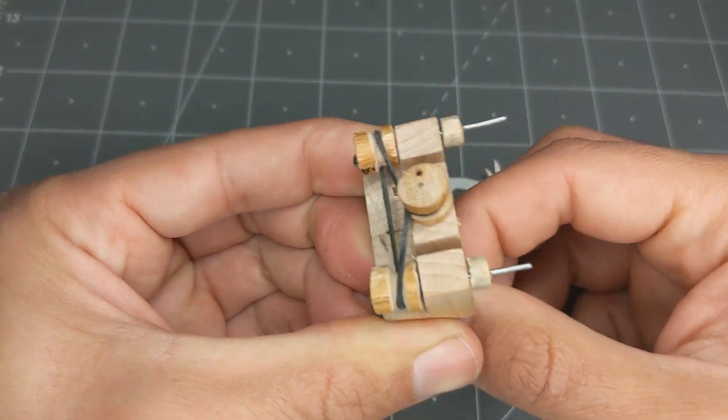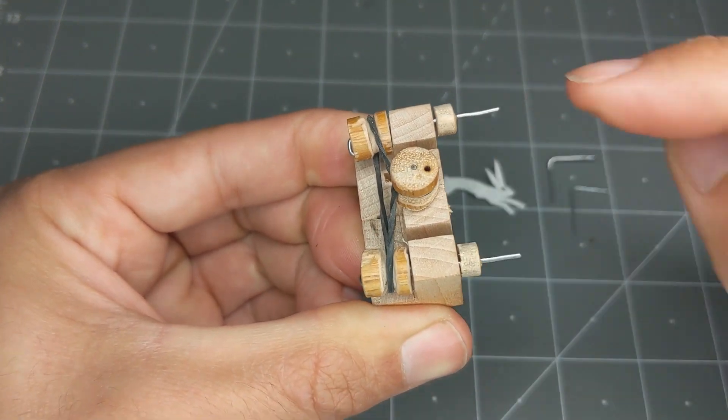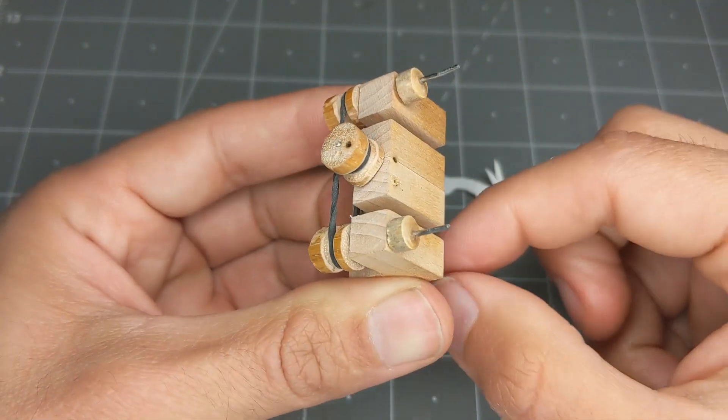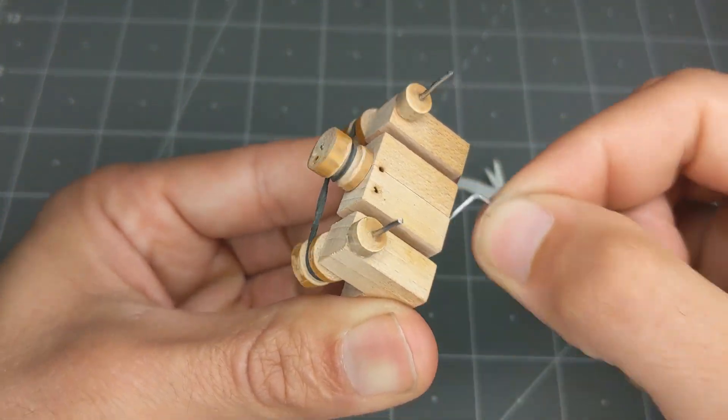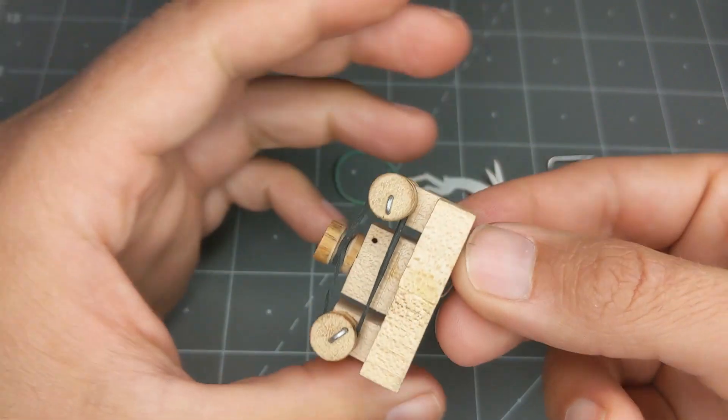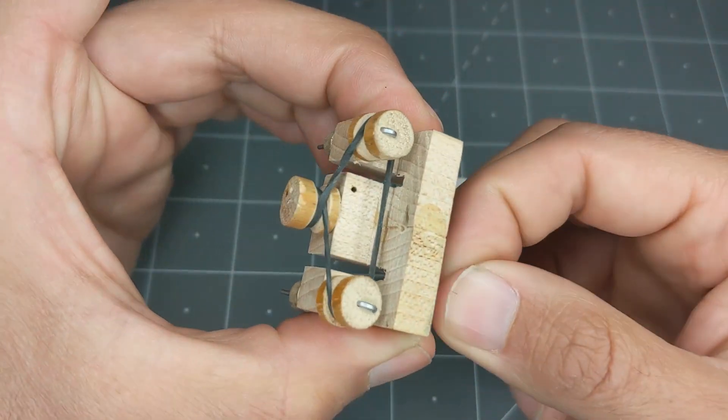So if I spin this one, then you can see how the motion gets transferred around. The rubber band gets all twisted in there, but seems to be good enough.